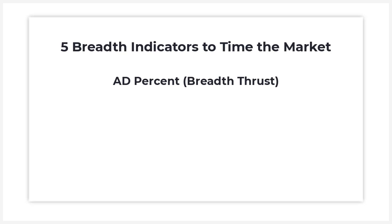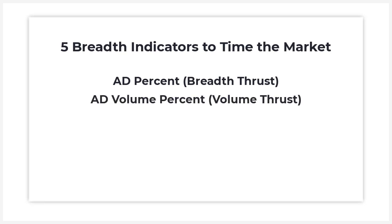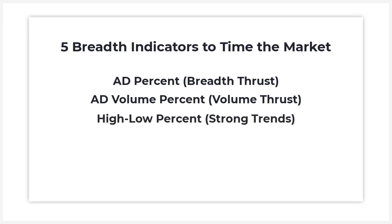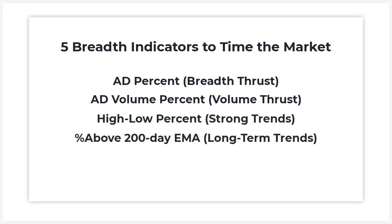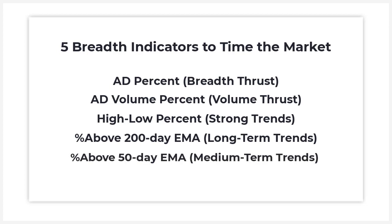Today I want to introduce you to five breadth indicators you can use to help time the market: 80% for a breadth thrust, 80% for a volume thrust, high-low percent, strong uptrends versus strong downtrends, percent above 200-day EMA, and percent above 50-day EMA.